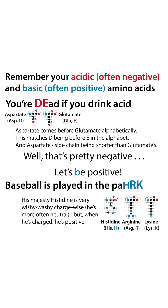Speaking of acidic and basic — you're dead if you drink acids, so aspartate and glutamate, our D and our E, are going to be our acidic amino acids. Those are often negatively charged. For our positively charged, basic amino acids, remember baseball is played in the park: histidine, arginine, and lysine are your basic amino acids and they're going to be positive. His majesty histidine is very wishy-washy charge-wise, but when he's charged, he's positively charged.